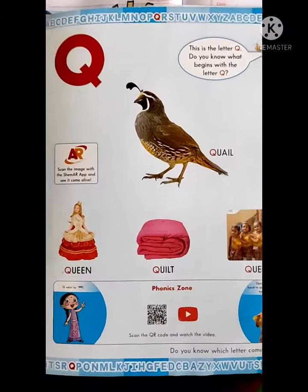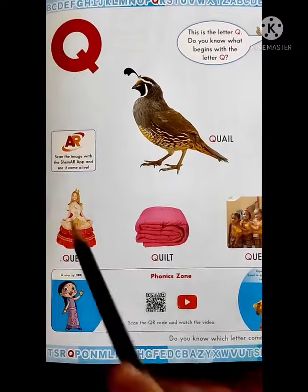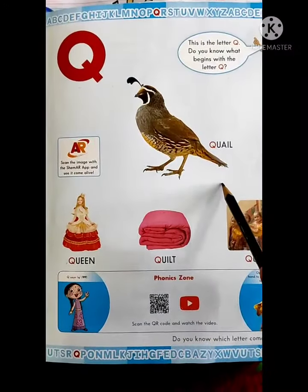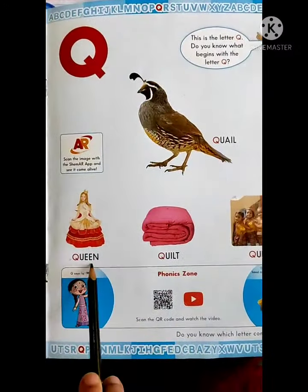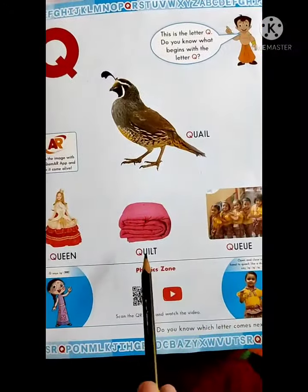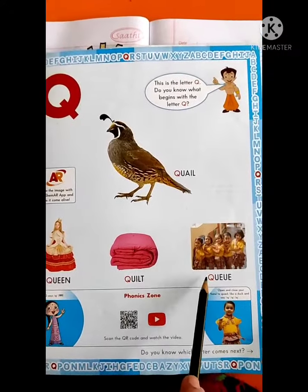Now we will read from blue book. Q for Quail. Q for Queen. Q for Quilt. Q for Cue.